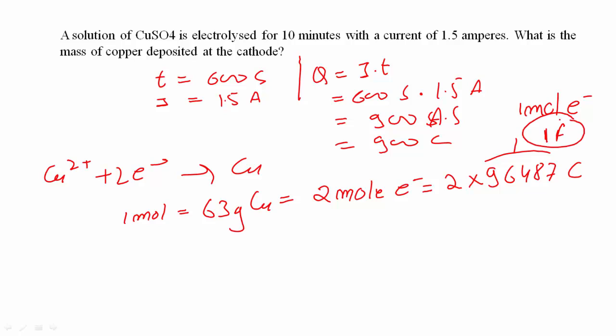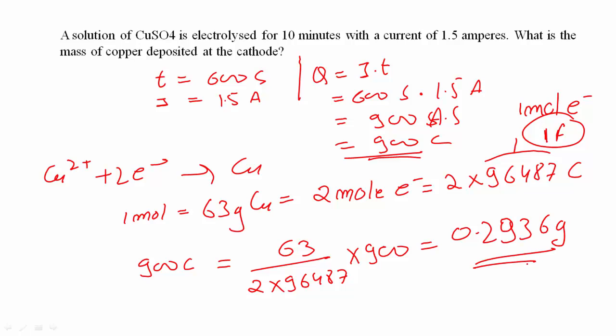So if 900 coulombs of electricity is passed, which we have passed through the solution, the amount of copper produced would be 63 divided by 2 into 96487 into 900. That is 0.2936 grams of copper would be produced.